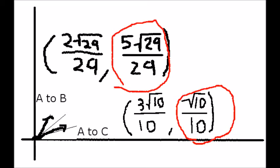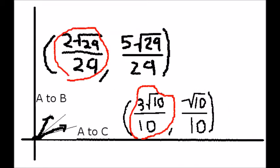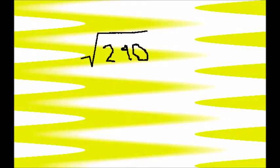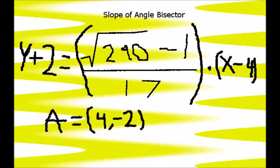To find the slope of the angle bisector, we can divide the difference between the two y coordinates by the difference of the two x coordinates, rise over run, which is (√290 - 1)/17. To find the equation of line DA, we use point slope form to arrive at y + 2 = (√290 - 1)/17 × (x - 4).